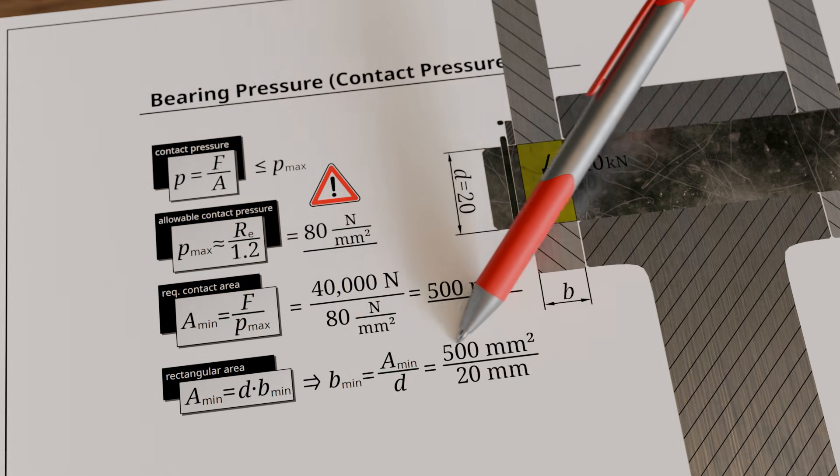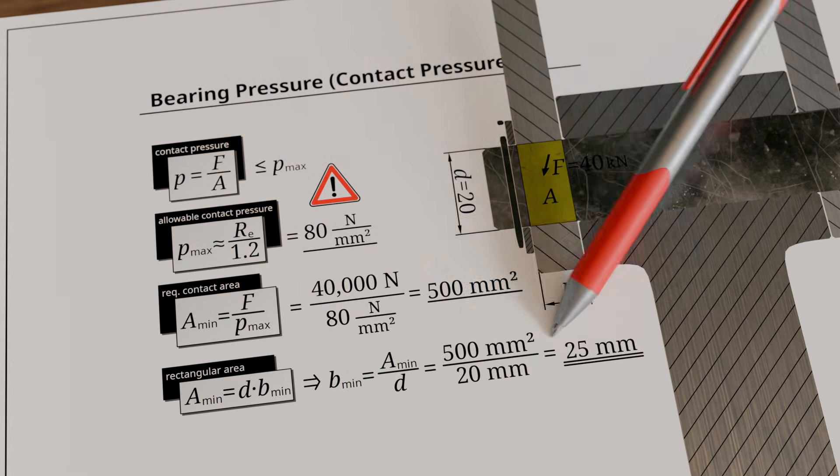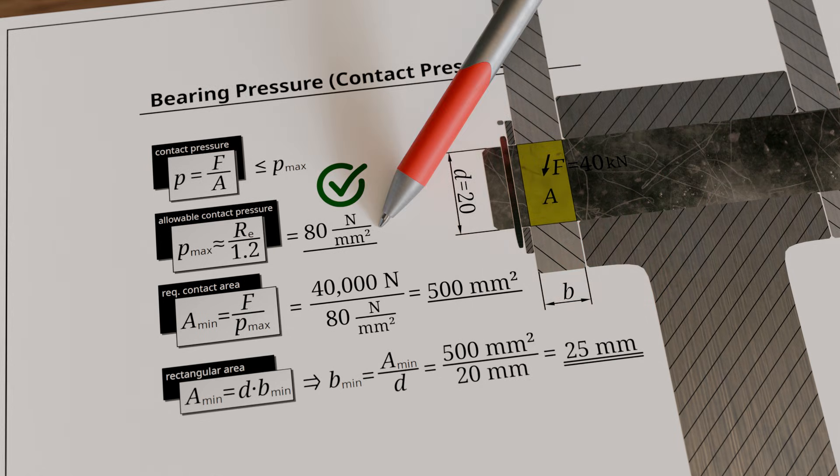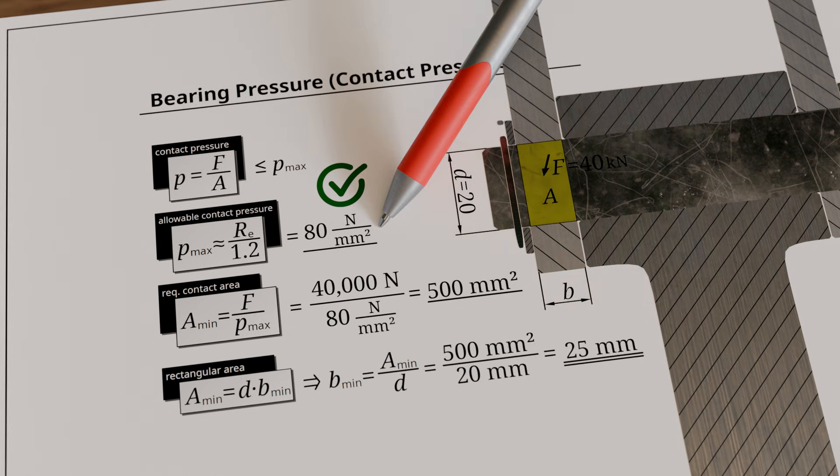After rearranging the formula for the rectangular bearing area and substituting the numerical values, we obtain a minimum required clevis width of 25 millimeters. With this width, it is ensured that the maximum allowable bearing pressure of 80 newtons per square millimeter is not exceeded.